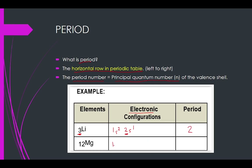Now look at Mg. Mg is 1s2, 2s2, 2p6, and 3s2. Let's calculate: 6 plus 2 plus 2 is 10, and 10 plus 2 is 12 — so there are 12 electrons for magnesium. To find the period, look for the largest principal quantum number: 1, 2, 2, 3 — so 3 is the largest number, meaning magnesium is positioned in period 3.